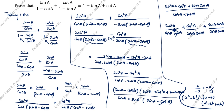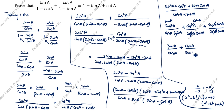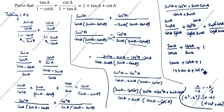Next step: sin squared A plus cos squared A plus sin A cos A divided by cos A sin A. Since sin squared A plus cos squared A equals 1, we get: 1 divided by cos A sin A plus sin A cos A divided by cos A sin A. Simplifying: sin A by cos A plus cos A by sin A plus 1, which is tan A plus cot A plus 1. You see RHS comes. So we rewrite the answer as 1 plus tan A plus cot A. LHS equal to RHS, hence proved. Thanks for watching this video.